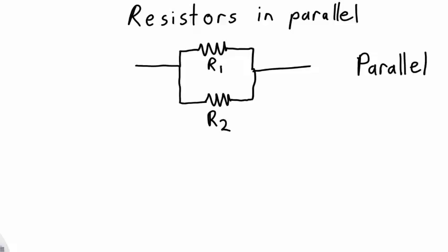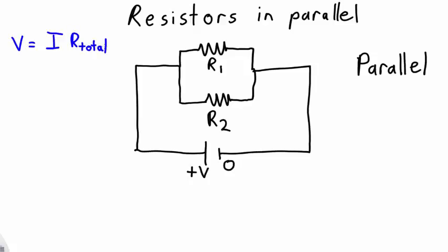Just like last time, I'm going to assume that these two resistors together are attached to some arbitrary voltage source. The total resistance will satisfy Ohm's law. The voltage across the whole circuit is going to be equal to the current flowing through the circuit times the total resistance.